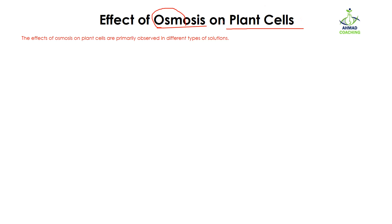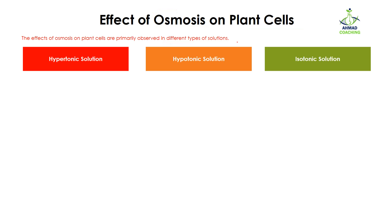Let's talk about the effects in the context of different types of solutions. We have three types of solution: hypertonic solution, hypotonic solution, and isotonic solution. All these solutions have an effect on plant cells because osmosis is happening in these solutions, so let's study about these solutions one by one.